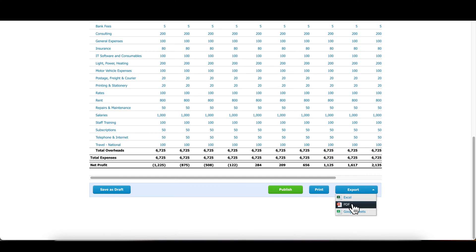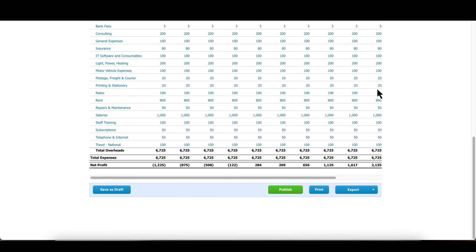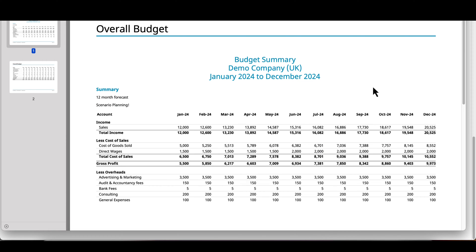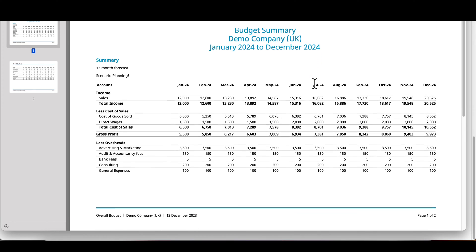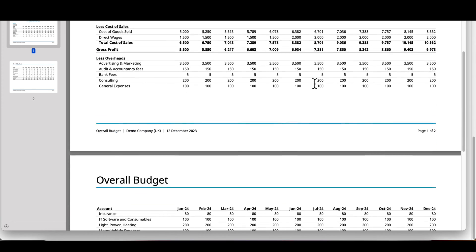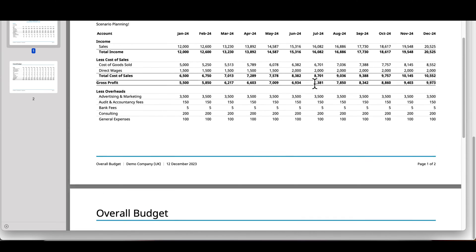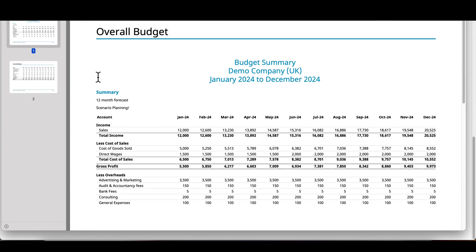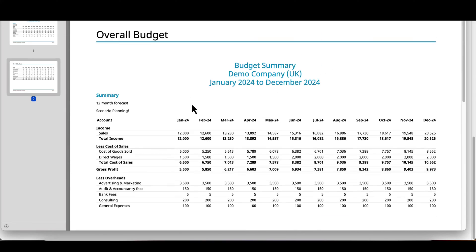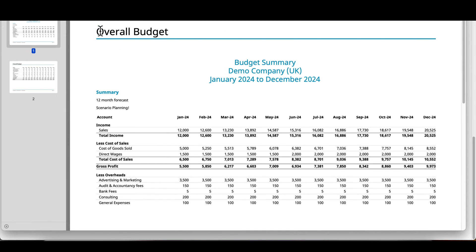You want to hit PDF on the export, and then have a look at your PDF forecast. It looks beautiful. So you share this with your team and go through it for the different scenarios — so you can make decisions about which scenario to go with, essentially.